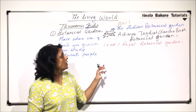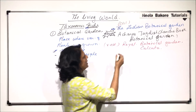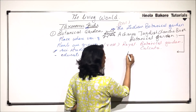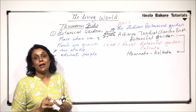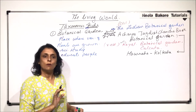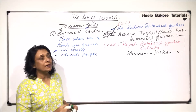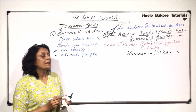When it was called the Royal Botanical Garden, it was said to be situated in Calcutta — the city we now call Kolkata. So the current name is Acharya Jagdish Chandra Bose Indian Botanical Garden, and it is located in Howrah, Kolkata. To summarize: it was first called the Royal Botanical Garden, Calcutta; then the Indian Botanical Garden; and nowadays it is called Acharya Jagdish Chandra Bose Botanical Garden, situated in Howrah, Kolkata.